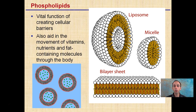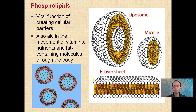Lastly, phospholipids have a vital function in coating cellular barriers and also aid in movement of vitamins, nutrients, and fat-containing molecules throughout the body. You see these round portions here — the liposome — we have hydrophilic heads on the outside forming a bilayer and also forming a pocket on the inside. The cell here is only one layer with hydrophobic tails pointed inward. What we commonly see in cells is the bilayer sheet, which is semipermeable, allowing them to control and regulate many things coming into and leaving the cell.